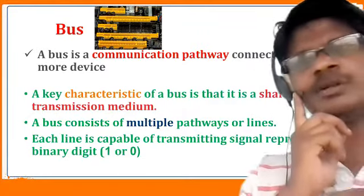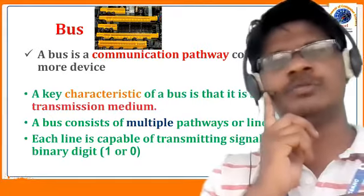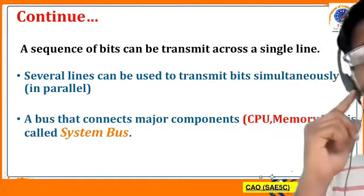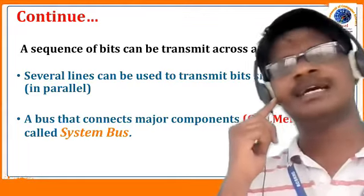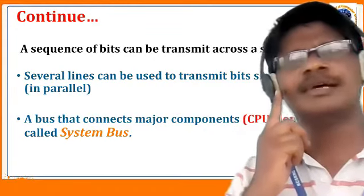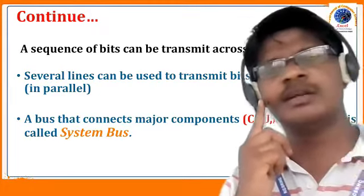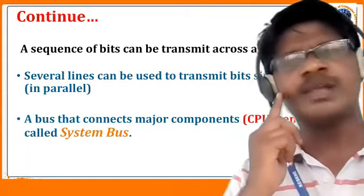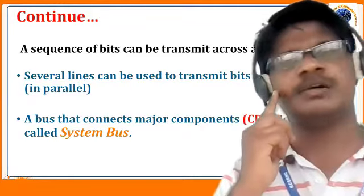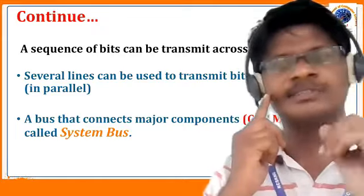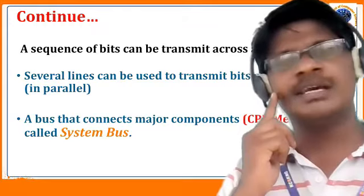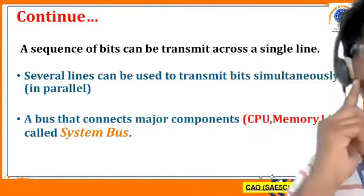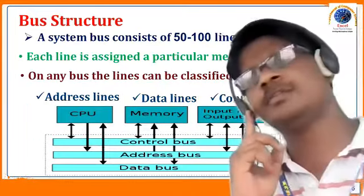Several lines can be used to transmit bits simultaneously — that is, we can transmit n number of bits in parallel. A bus connects major components: the memory, the I/O, and the CPU, as we have already seen in the previous video. The connection of these components is called the interconnection structure. A bus or communication pathway that connects these three major components is called the system bus.